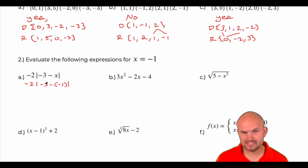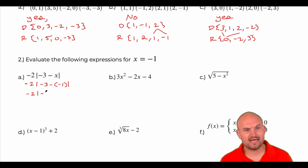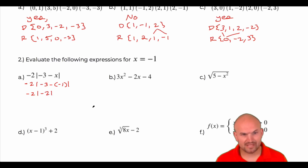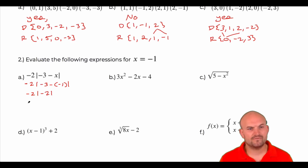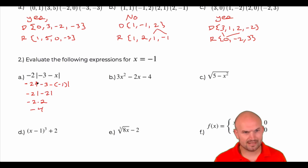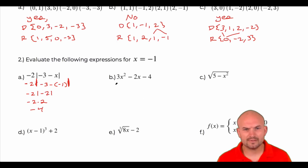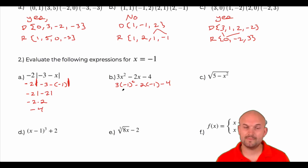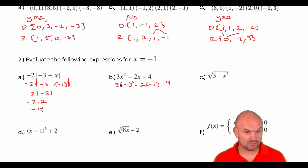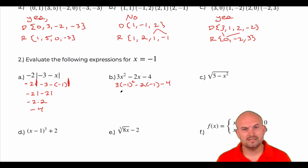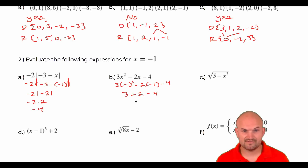Be careful with the double negative — this is negative three minus a negative one, which is really adding a positive one, giving us negative two. So we have the absolute value of negative two. Remember, absolute value is the absolute distance from zero, so it's always positive. This becomes negative two times two, which is negative four. For the next one: three times negative one squared minus two times negative one minus four. We square the negative one first — that's negative one squared, which is positive one, times three. Negative two times negative one is positive two, then minus four. Three plus two is five, minus four is one.